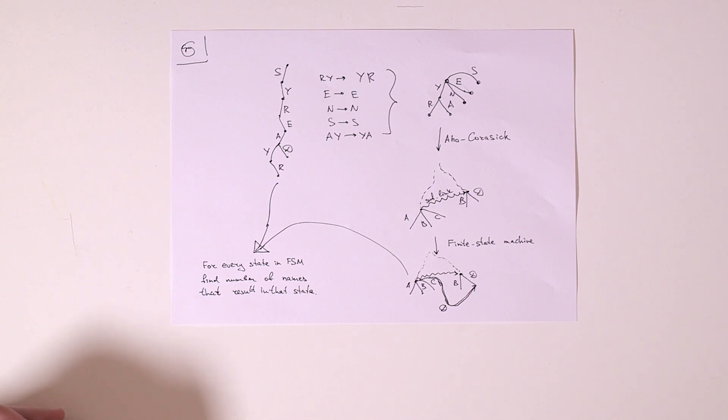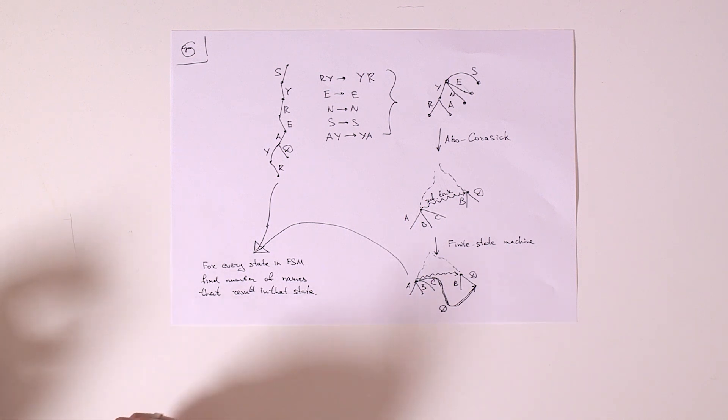What we do next we apply this finite state machine to the trie which is already given to us explicitly in the input. We store which states of this finite state machine correspond to every node in the trie and then we just find how often each state occurred.